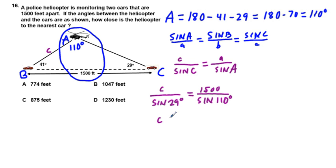And so C is going to be equal to 1500 feet times the sine of 29 degrees, and that's going to be all over the sine of 110 degrees.